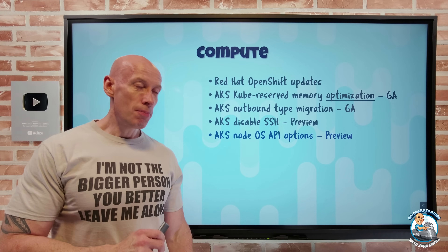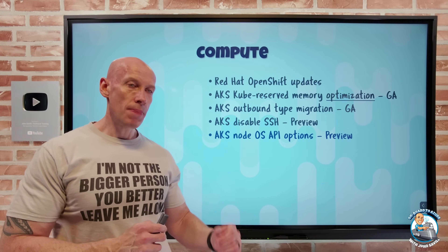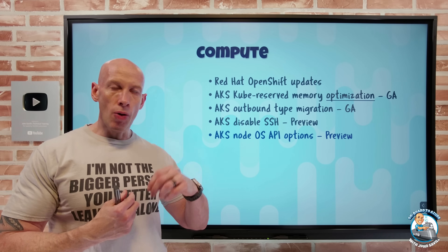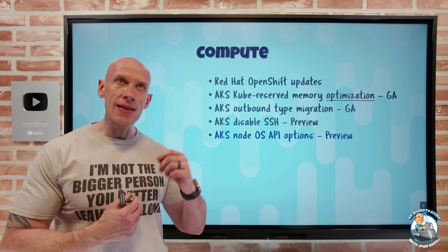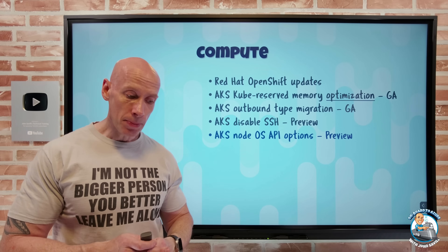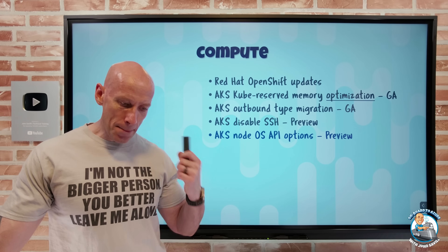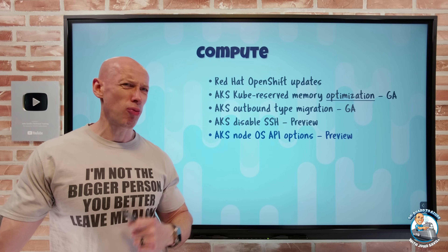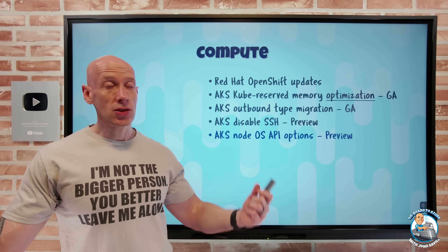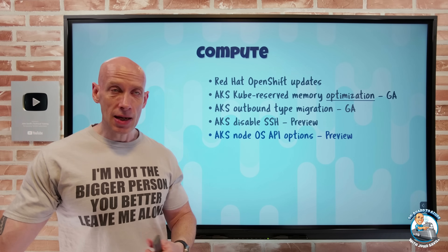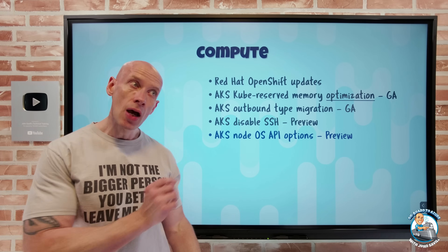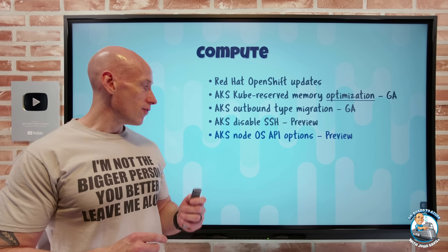I can now get information about the nodes that make up my AKS cluster from Azure Resource Manager. I could always get this information through the Kubernetes API, but now I can get basic information - node information, private IPs - using ARM. So maybe I don't have access to the Kubernetes API but still want some basic node information for troubleshooting purposes. Now available in preview.